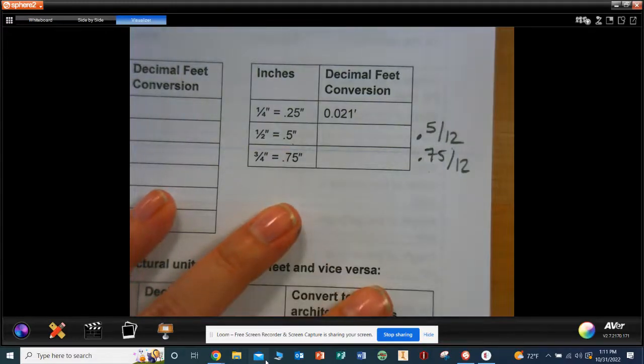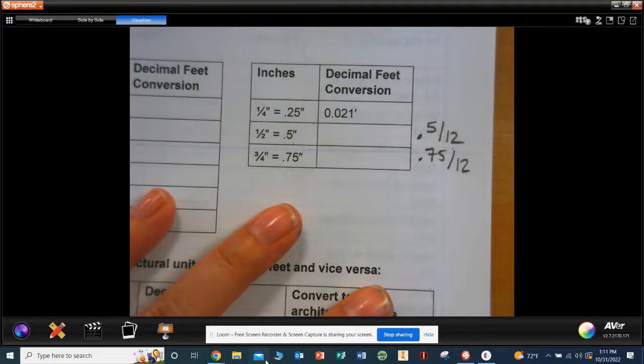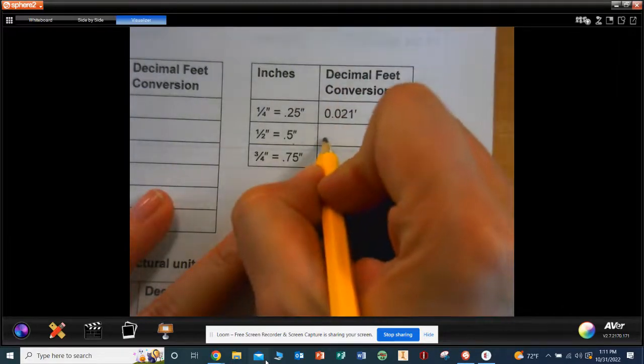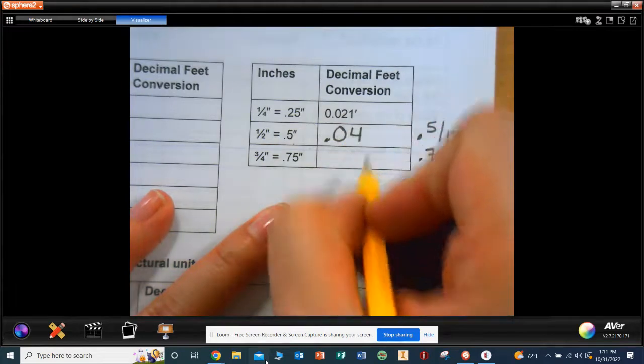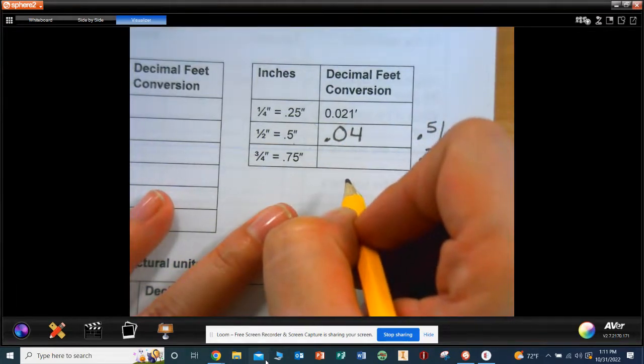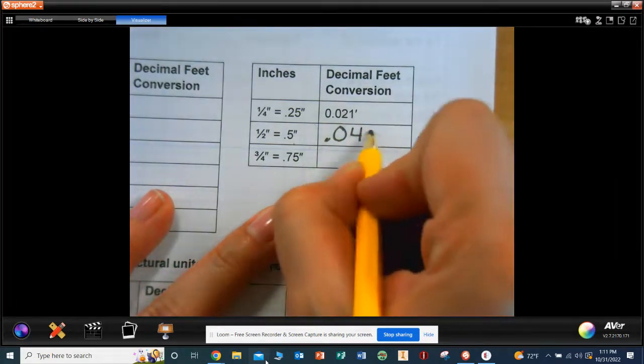So 0.5 divided by 12, 0.042. What does the 6 tell the 1 to do? Go up.